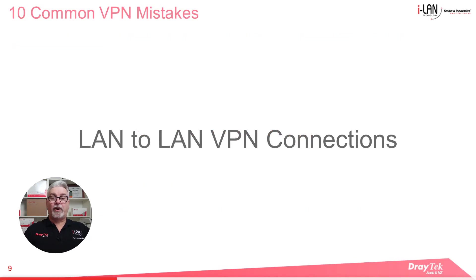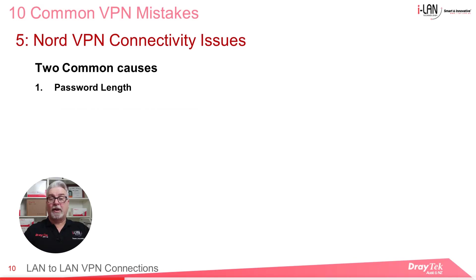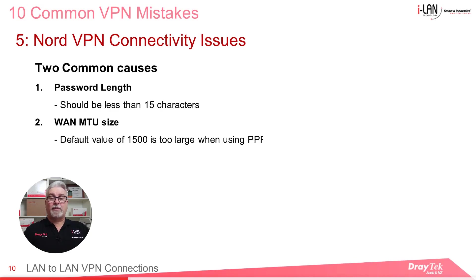Now that we've looked at some dial-in VPN connection issues, I'll move on to some common mistakes when setting up LAN-to-LAN VPN connections. The first LAN-to-LAN issue we'll look at is setting up a connection to NordVPN. The two most common causes are passwords that are too long and WAN MTU size. Passwords should be less than 15 characters, and the default WAN MTU setting in Draytek routers is 1500, but if PPPoE authentication is used then this has to be reduced to at least 1492. However, sometimes a lower MTU value is required.